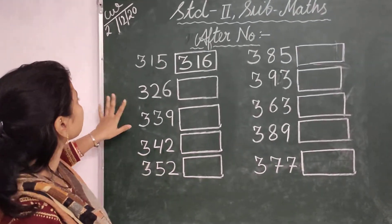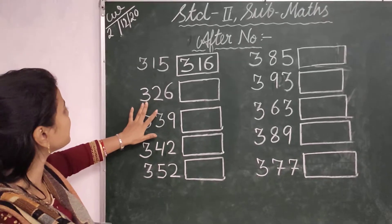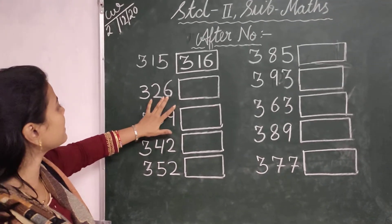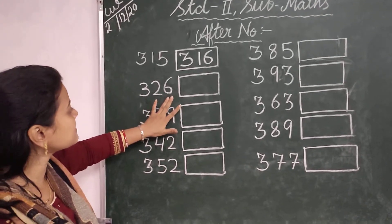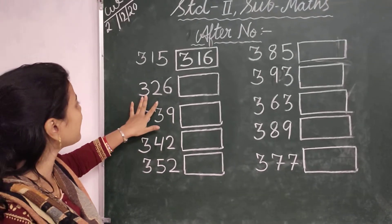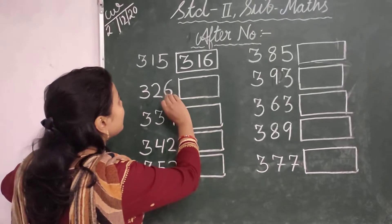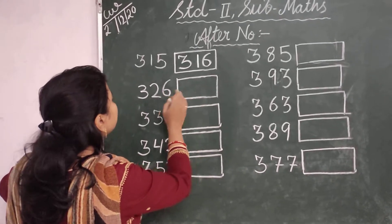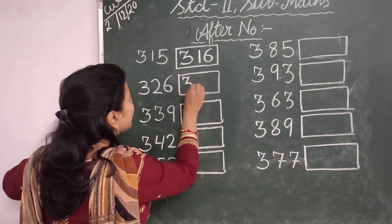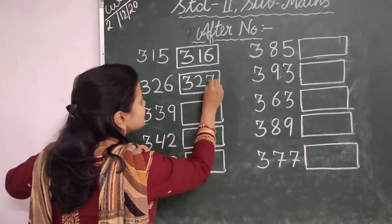Then the next number is 326. Here 26. So the next number will be 327. The number that comes after 326 is 327.